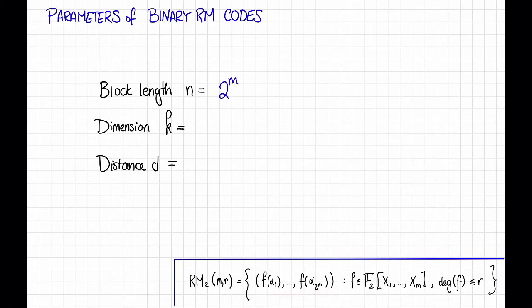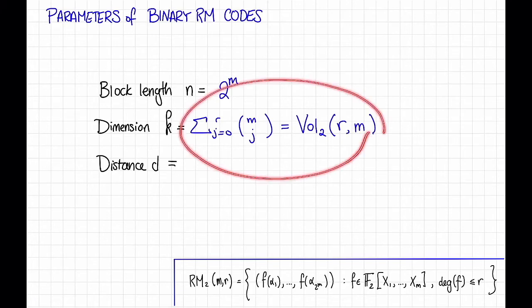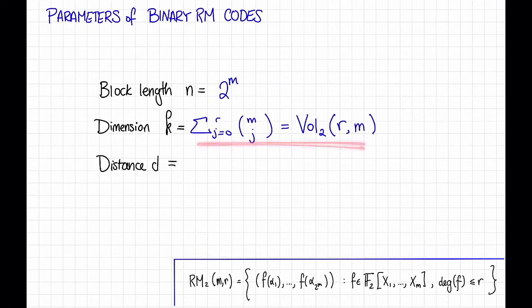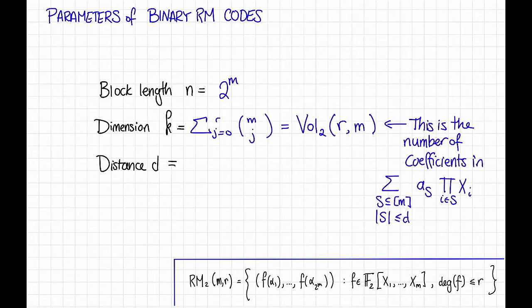The dimension is the sum from J equals 0 to R of M choose J, which we actually had some notation for. This was the volume over an alphabet of size 2 of the Hamming ball of radius R in M-dimensional space. The reason for this formula is that this is the number of coefficients in an arbitrary polynomial that we get to choose.